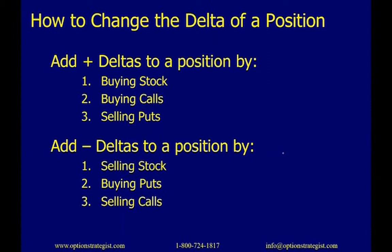How do we change the delta of a position? To add positive deltas, we could buy stock (that's 100 deltas per 100 shares), buy calls (which have positive deltas), or sell puts (puts have negative deltas, so selling them adds positive deltas). To add negative deltas, we could sell stock or short it, buy puts, or sell calls. Any of these three ways will decrease the deltas in your position.